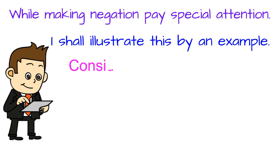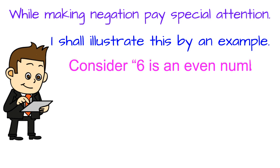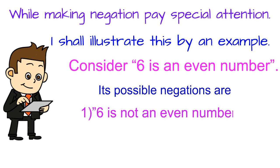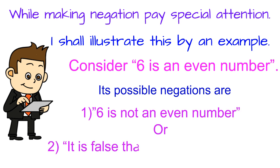Consider: '6 is an even number.' Its possible negations are: Number 1 — '6 is not an even number.' Or Number 2 — 'It is false that 6 is an even number.'